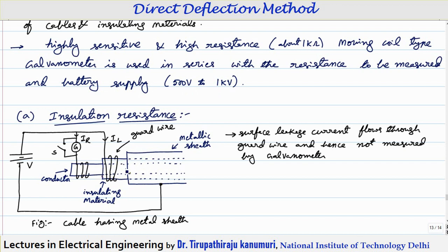Between the conductor and the metallic sheath there is an insulator. Whenever you give the supply, because this is nothing but two plates — the outer metallic sheath acts as one plate, the conductor acts as another plate, and in between there is an insulator — it automatically acts as a capacitor. Whenever a capacitor is suddenly connected, it will start charging because that displacement current will start passing through it.